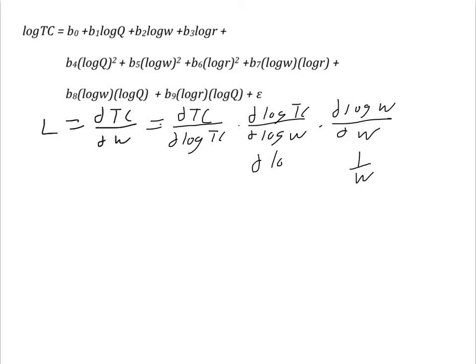Then I have my middle term here, log TC with respect to log W. Then this first term is just the reciprocal of the partial derivative of the log of TC with respect to the log of TC. This is just the input share, that is the share of total costs devoted to labor.